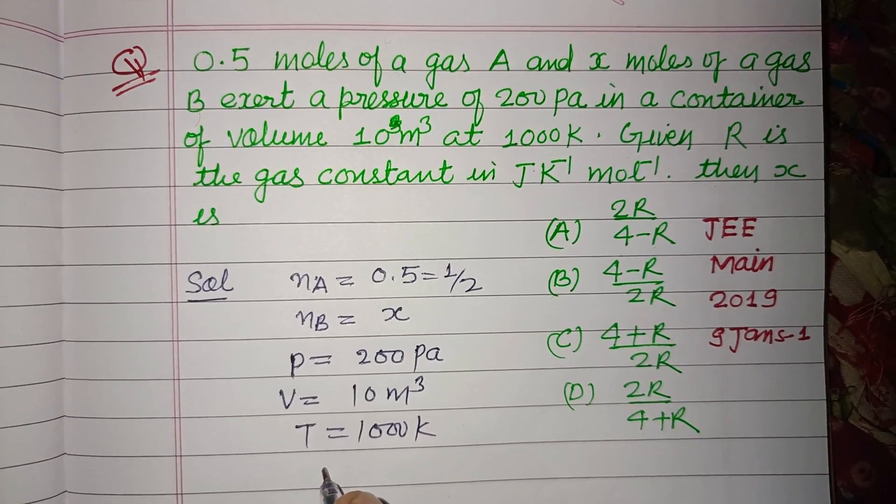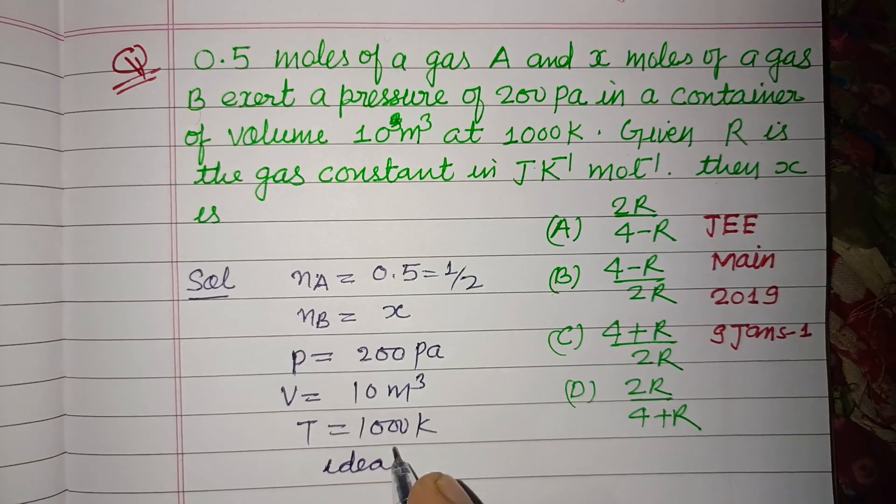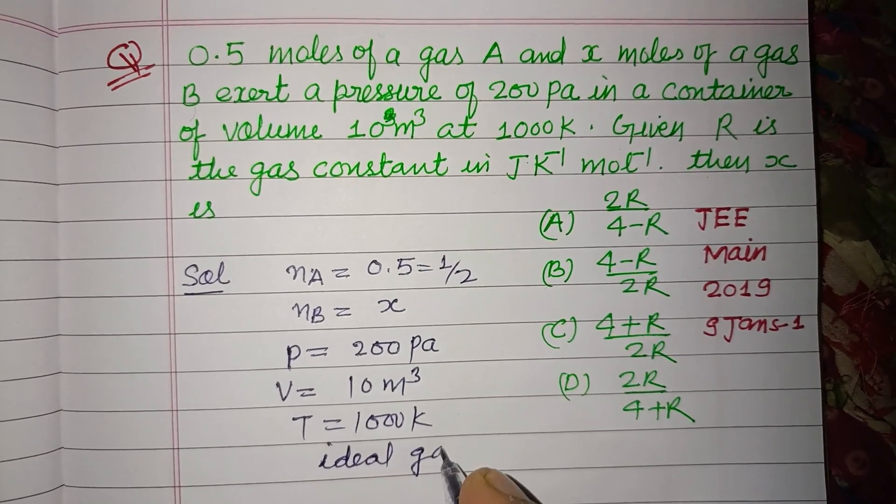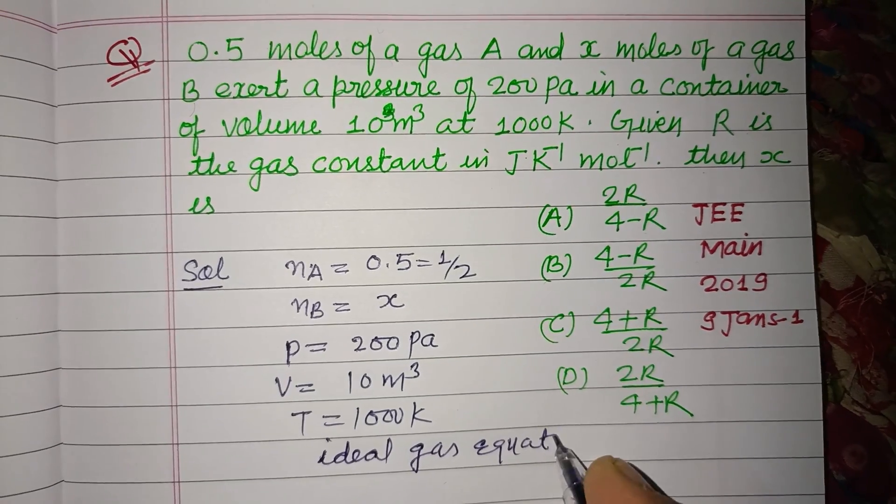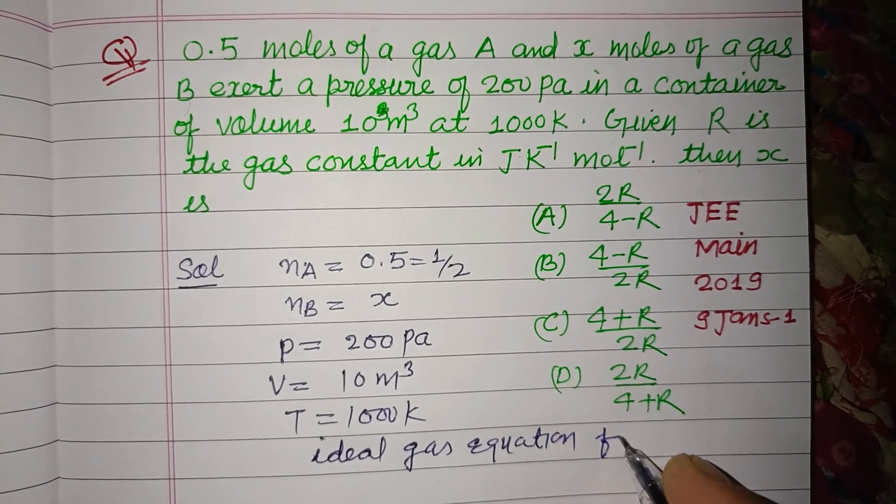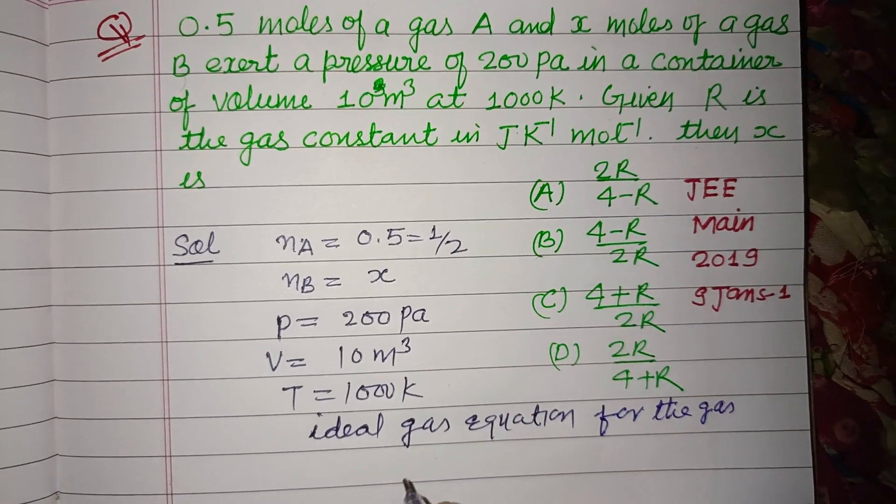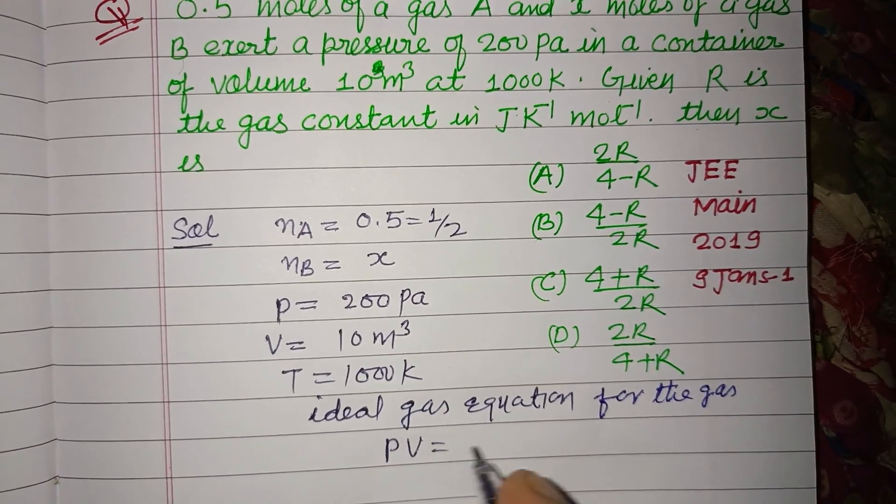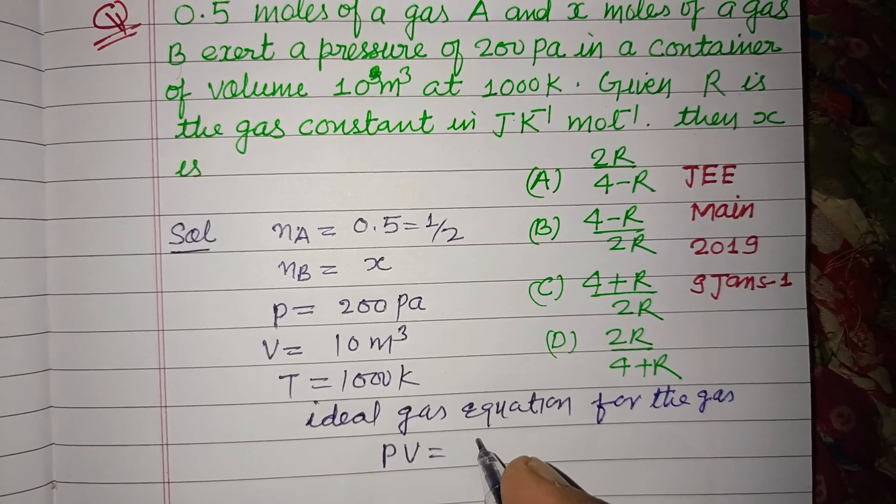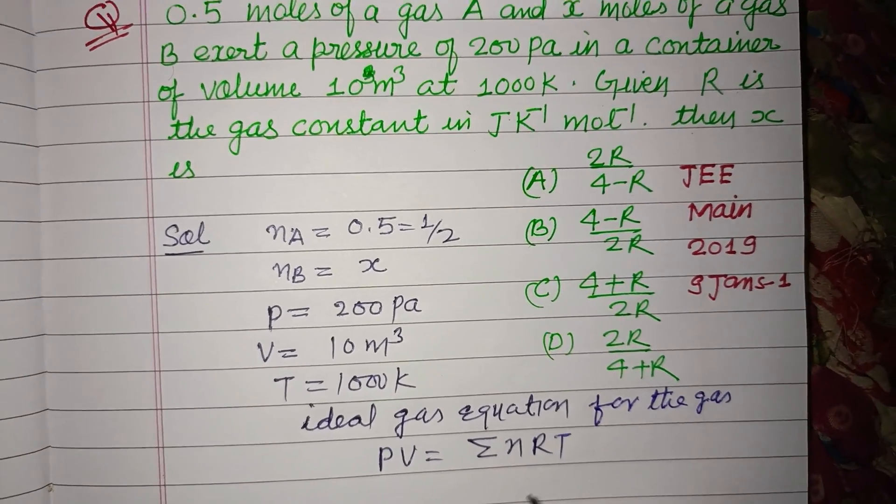So using ideal gas equation for the gas, PV equals the sum of n times RT,